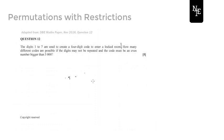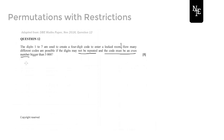You also need to now start thinking about the fundamental counting principle. So the question is: how many different codes are possible if the digits must not be repeated? So there's the first restriction — we have no repetition. The second restriction is that the code must be an even number.